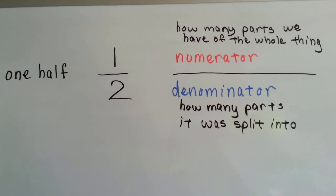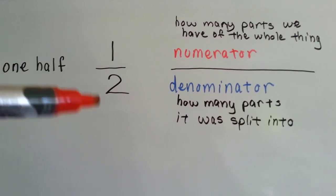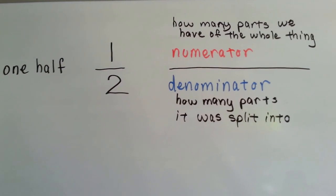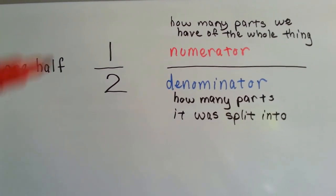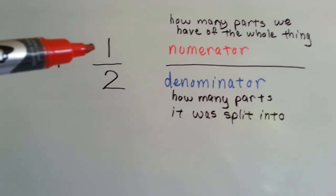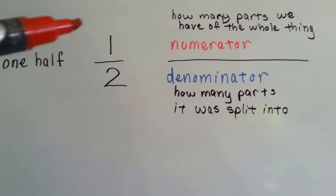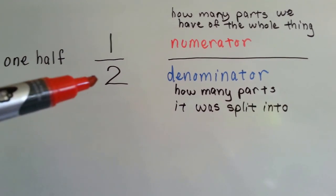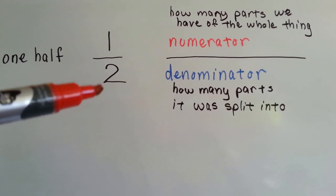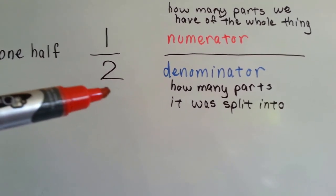So, this is one half. That's half of something. The top number is the numerator and it tells us how many parts we have of the whole thing. The bottom number is the denominator and it tells us how many parts the whole thing was split into.